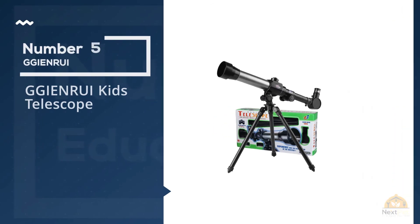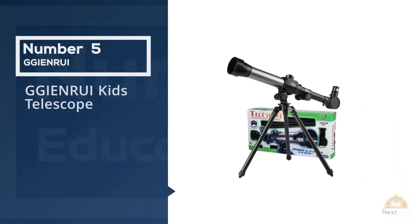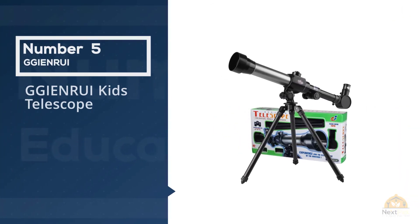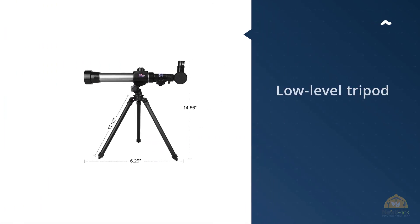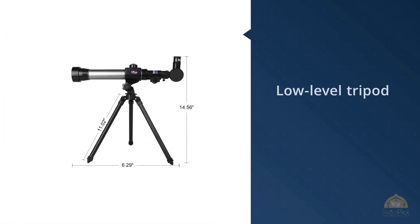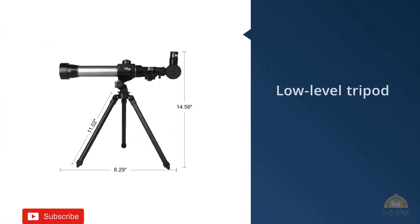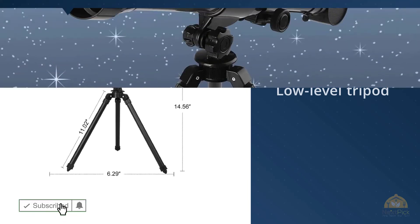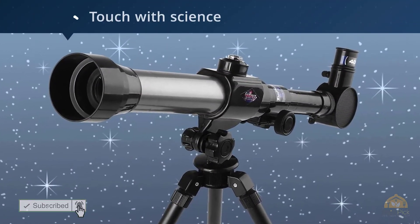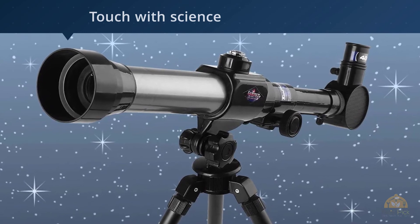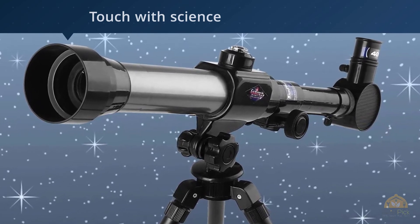Number five: GG and Root kids telescope. The GG and Root kids telescope is a light portable telescope that you can use during everything from camping trips to backyard sleepovers. It's easily set up on a low-level tripod so that little astronomers can operate it from their own heights, and it has a tough durable construction that won't break even when operated with extreme excitement.